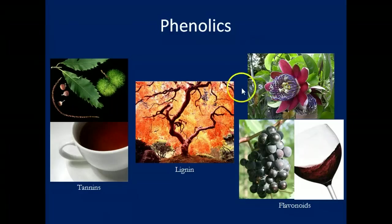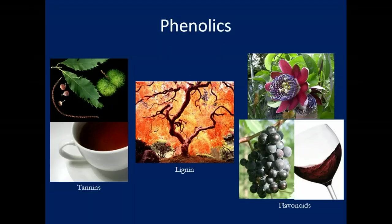Another type of phenolic compound is lignin, which is found in anything with a woody stem or woody trunk. What gives wood its strength is this phenolic compound called lignin, and we'll come back to that a little bit later.